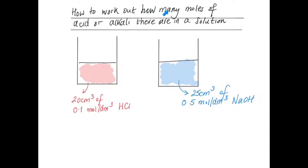How to work out how many moles of acid or alkali there are in a solution. Here we're given two solutions, one of acid and one of alkaline. The question says there were 20 centimeters cubed of 0.1 mole per decimeter cubed HCl, hydrochloric acid, and in the right hand beaker there were 25 centimeters cubed of 0.5 moles per decimeter cubed NaOH, sodium hydroxide.